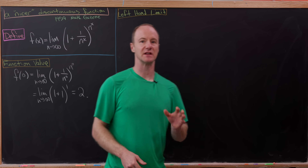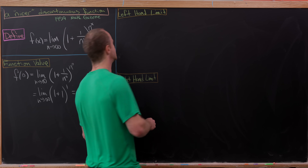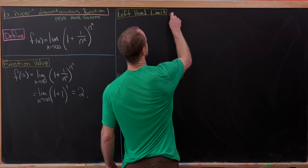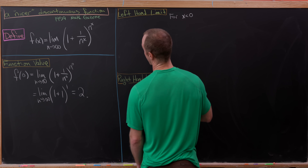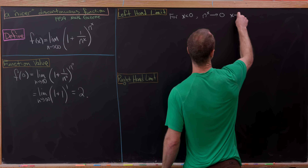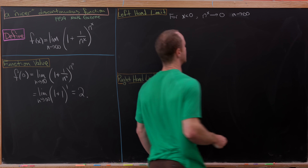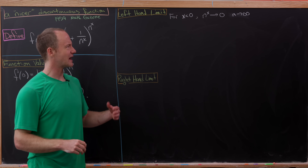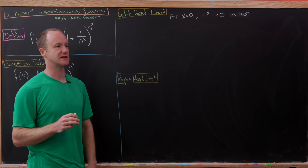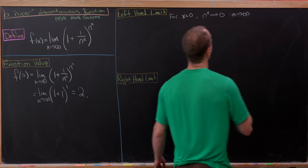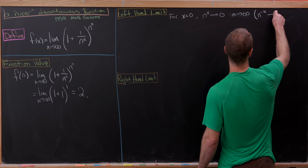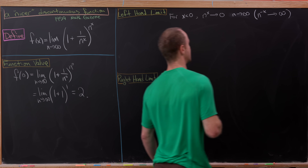Now let's look at the left-hand limit — the limit from below. For x values that are negative, n to the x is approaching 0 as n approaches infinity, because a negative x sends n to the denominator, making it grow larger and larger. Likewise, 1 over n to the x, in other words n to the minus x, is approaching infinity in this scenario.